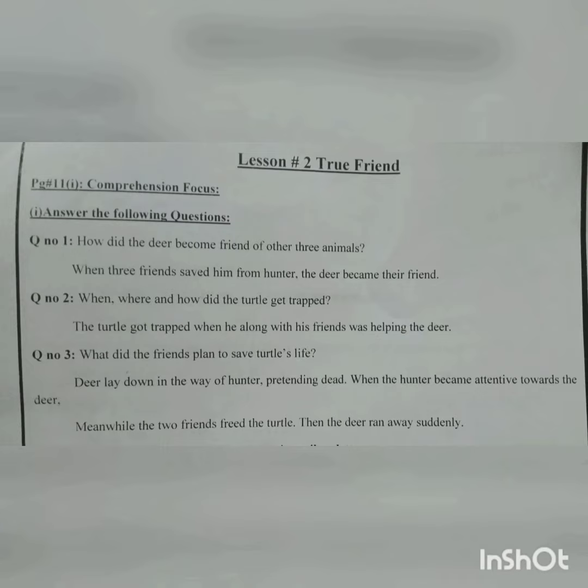Question number 3: what did the friends plan to save the turtle's life? Dosto ne kachwe ki jaan bachane ka kya mansoobah banaya? The answer is: the deer lay down in the way of the hunter, pretending to be dead. Hiran marne ka bahana karte hue shikari ke rasste mein let gaya. When the hunter's attention turned towards the deer, jab shikari ka dhiyan hiran ki taraf hua, meanwhile the two friends freed the turtle, is tarah dono dosto ne kachwe ko azad kar diya, then the deer ran away suddenly, tab hiran achanak bhaag gaya.